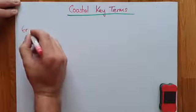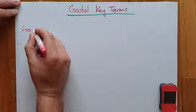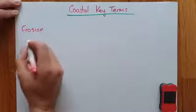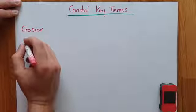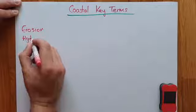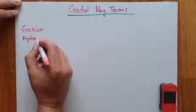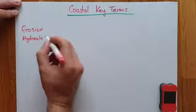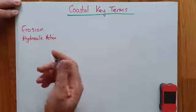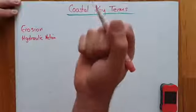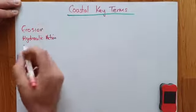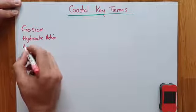Erosion means the wearing away or wearing down of material. The first and most obvious type is hydraulic action — hydraulic meaning liquid action — so the effect that water has on things, particularly waves pounding against rocks and forcing water into cracks.